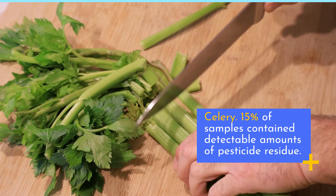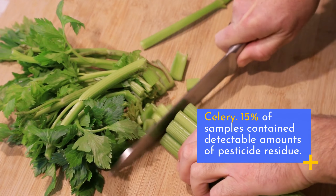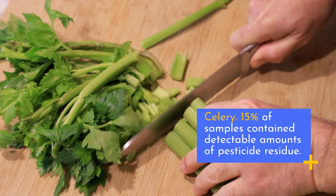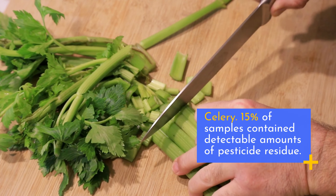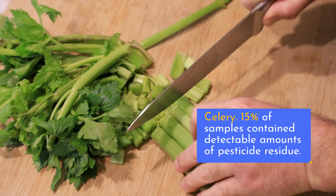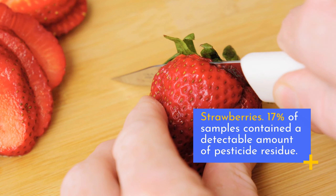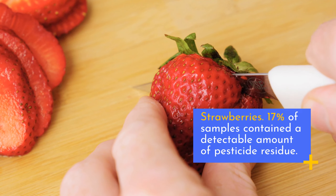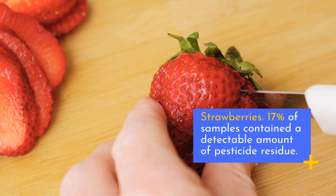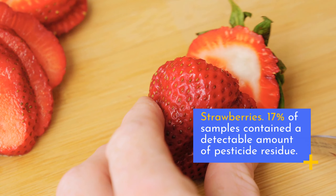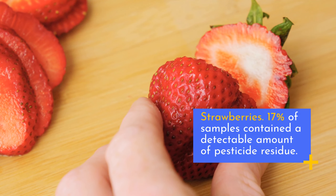Celery: 15% of samples contain detectable amounts of pesticide residue. Strawberries: 17% of samples contain detectable amounts of pesticide residue.